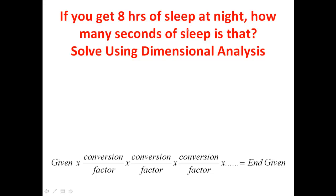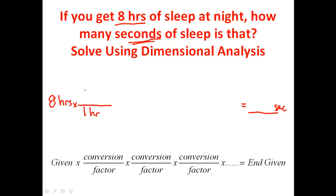If we get eight hours of sleep a night, how many seconds of sleep is that? We'll use dimensional analysis. The given is eight hours, and I want to convert to seconds. Step two: load up the middle with conversion factors. I need to convert out of hours — in one hour there are 60 minutes, so hours cancel out and I'm left with minutes. But minutes don't match seconds, so I need another conversion factor.